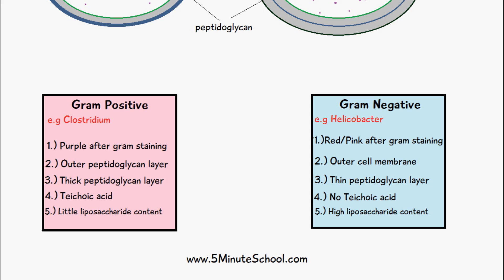To end the video, a few final points on the differences between gram positive and gram negative bacteria. Beyond the gram staining and membrane structure differences already covered, gram positive bacteria have teichoic acid while gram negative bacteria do not — teichoic acid is a glycopolymer responsible for bacterial cell division and maintaining cell shape. Finally, there is very little liposaccharide content in gram positive bacteria, whereas gram negative bacteria have a much higher liposaccharide content.